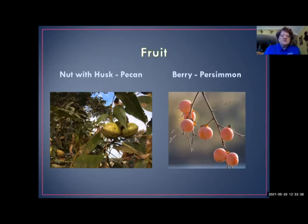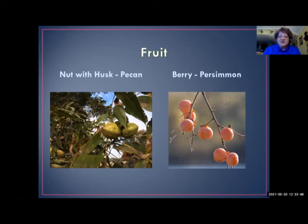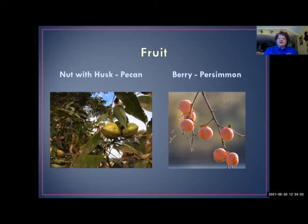A nut with a husk is another type of fruit — the Juglans family has that, like pecans and hickories, all with a husk around the nut inside. Persimmons have berries because inside the flesh there are many seeds, which makes it a berry.